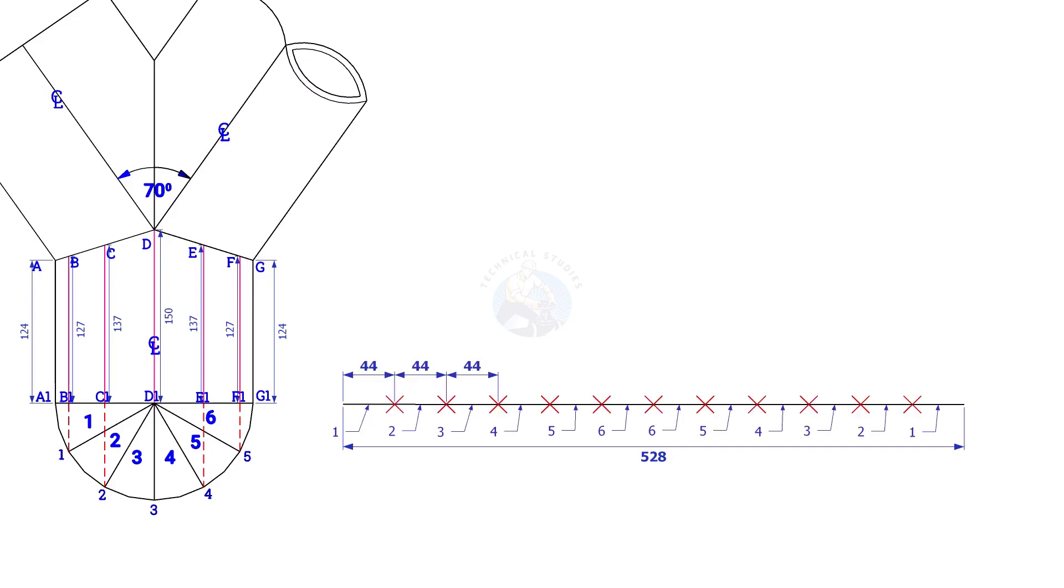528 divided by 12 is 44, so the length of each segment is 44mm. Draw a perpendicular line at the starting of this line. The length shall be 124mm.